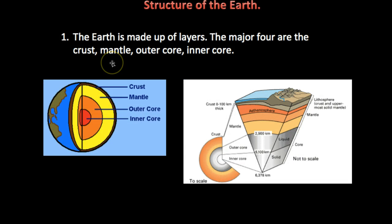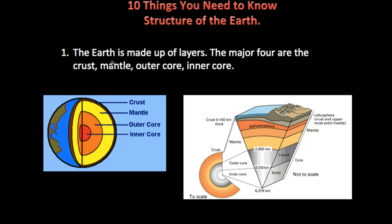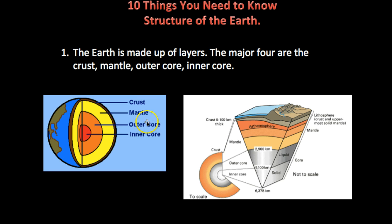There are 10 things you need to know about the structure of the Earth that the reading didn't cover perfectly, but this will be very quick. The first thing is that the Earth is made up of layers. There are four major ones, but as you can see in this diagram, they can be subdivided into more complex layers. The four major ones are the crust, the mantle, the outer core, and the inner core.